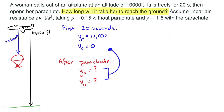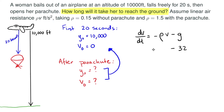How is the skydiver's velocity changing with respect to time in our first 20 seconds? We know velocity changes with respect to time as negative rho times velocity minus gravity. All of our units here are in terms of feet, so we'll use gravity as 32. Since we're in the first 20 seconds, rho is 0.15, so we have dv/dt = negative 0.15v minus 32.